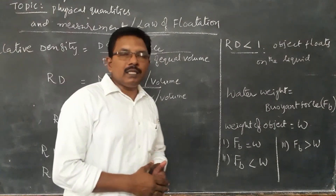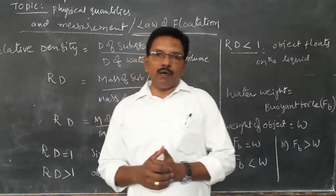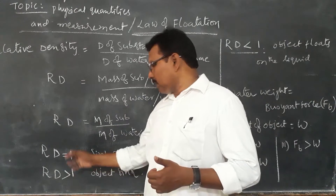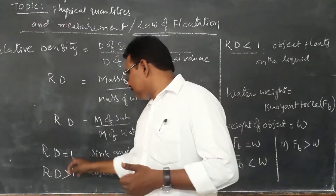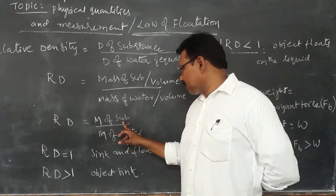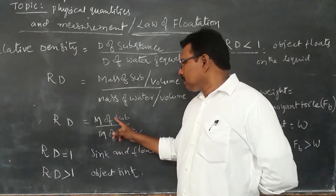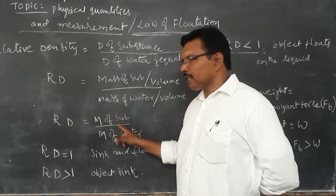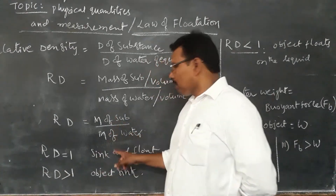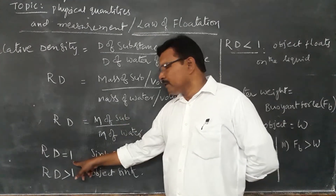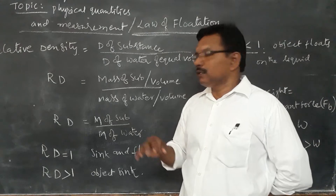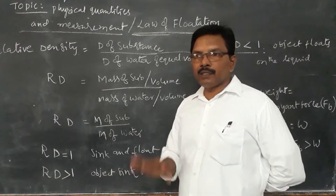By using relative density we can determine whether an object will sink or float. When relative density is equal to one, the numerator and denominator are equal — meaning mass of the substance equals mass of the water. So when we drop the object in water, the object weight and the water weight are the same — it will neither completely sink nor float.